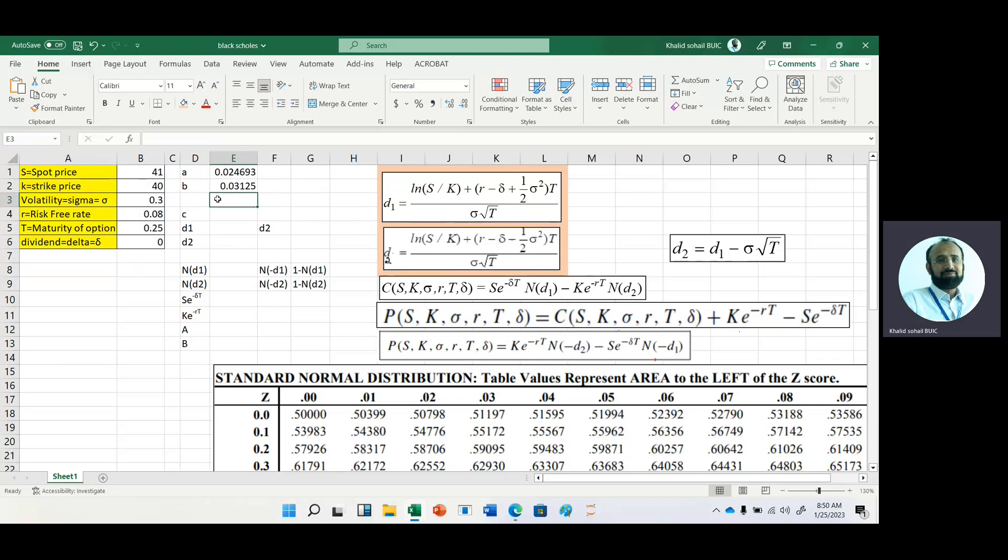After getting this, these two are added. Just add these two, and now get the denominator. In the denominator, we have sigma multiplied by time period under root 0.5. If we divide the numerator by denominator, we will get this value, which is 0.37.